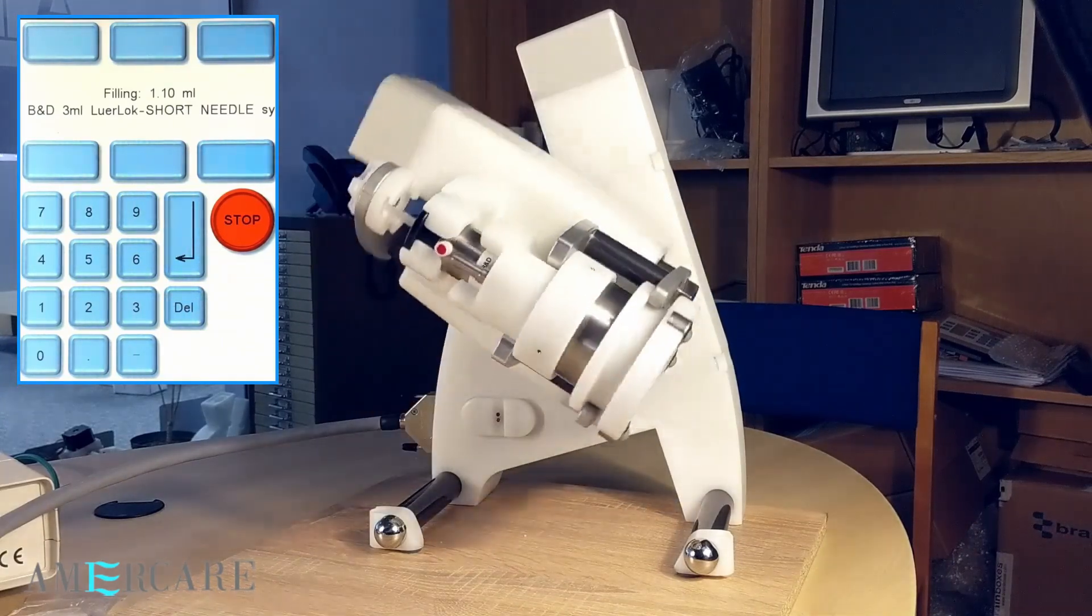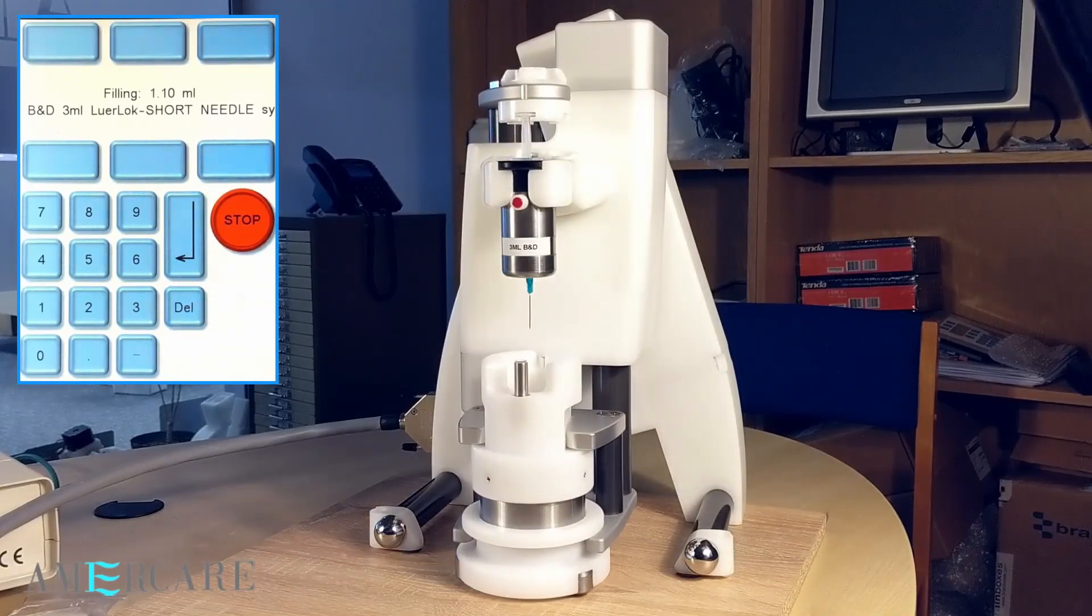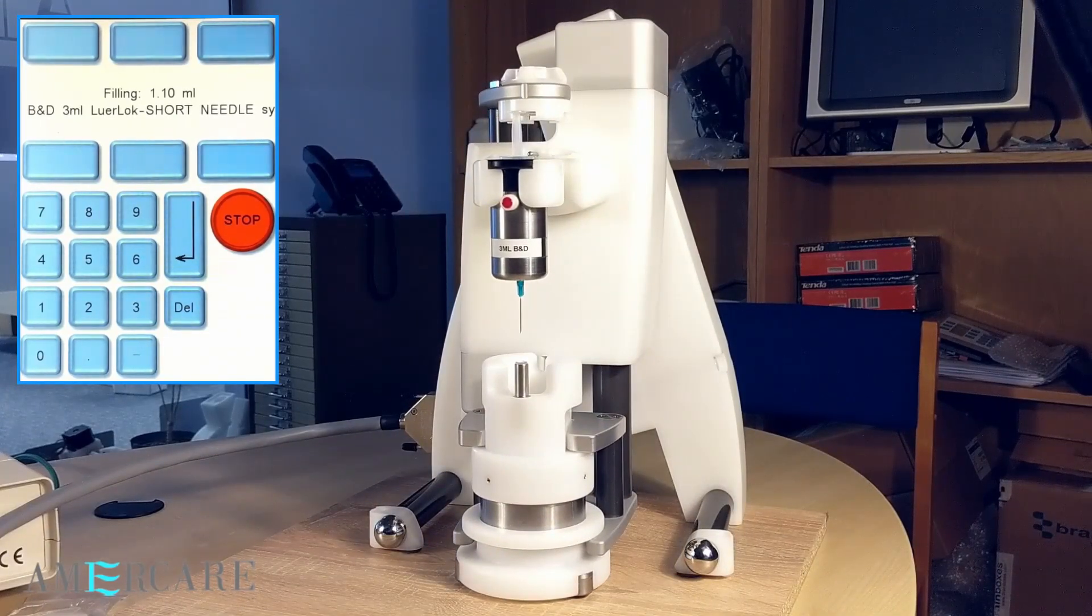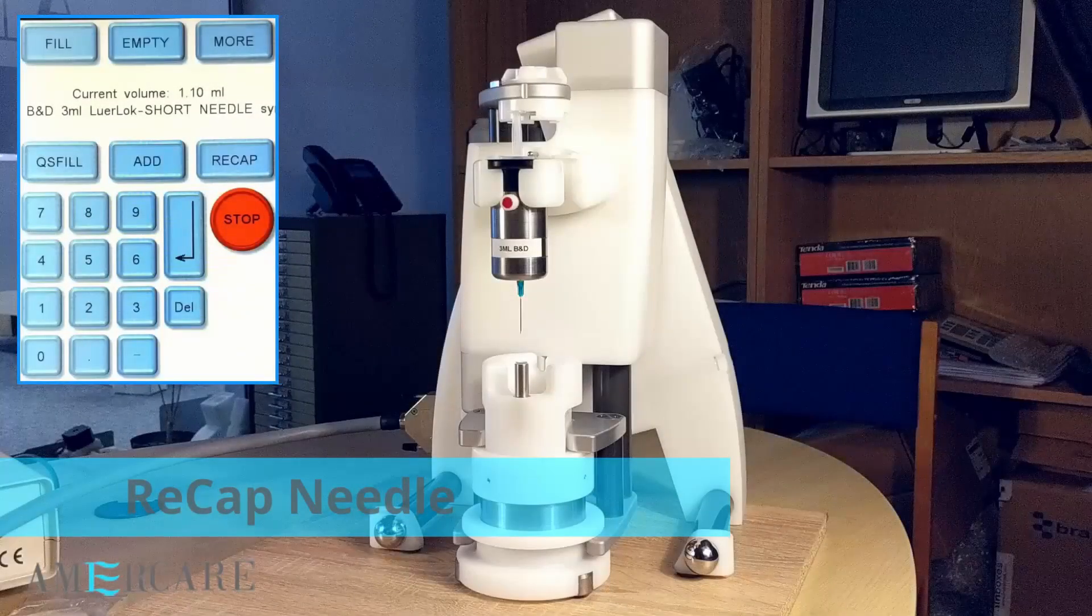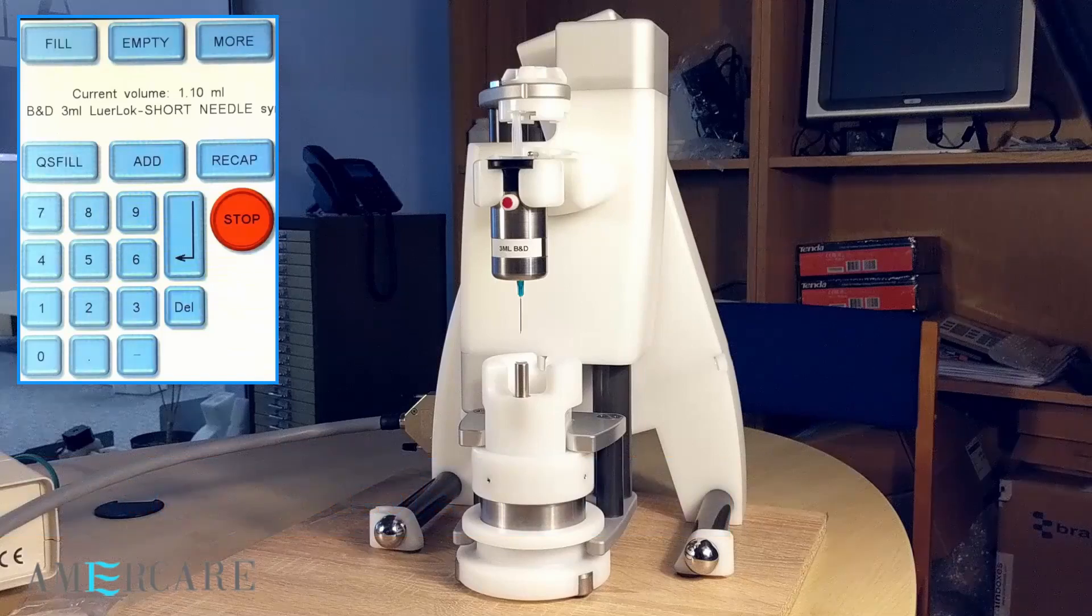The head inverts and moves the syringe to the unload position. Once the fill is complete, the unit can recap the needle sheath.